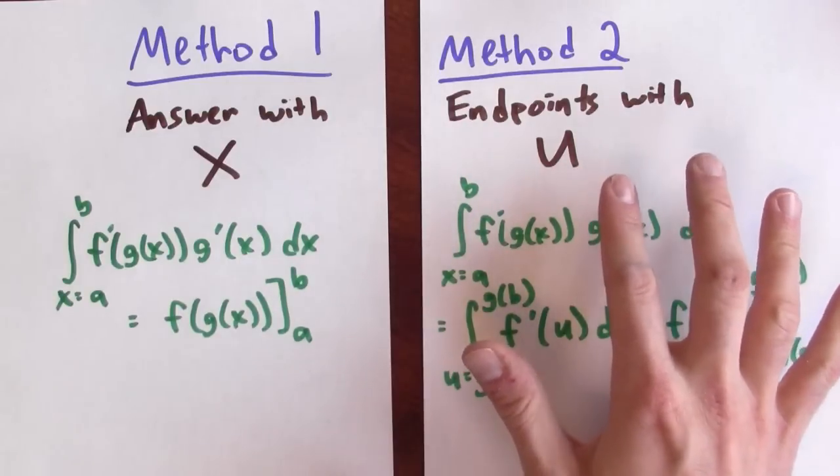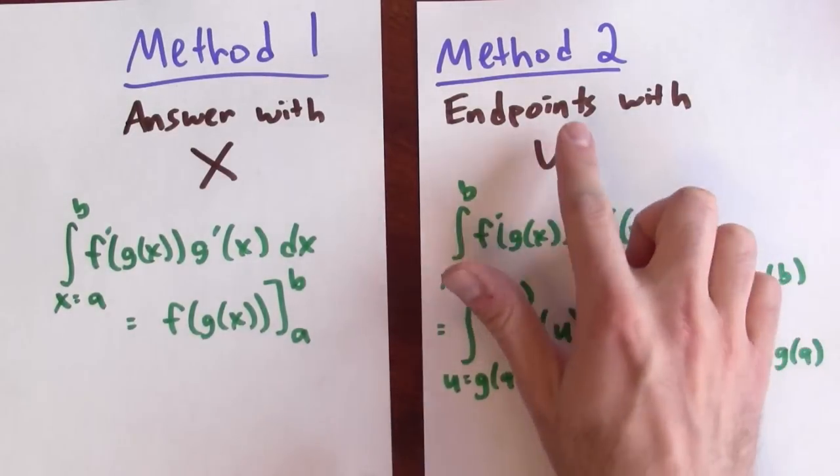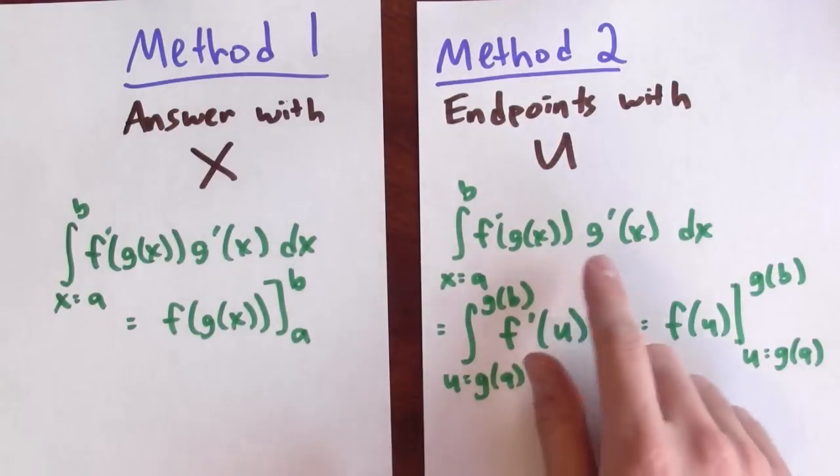In the second method, instead of finding the antiderivative in terms of x, I changed the endpoints to make the endpoints be in terms of u. So I took this original problem, and after making the substitution u equals g of x,